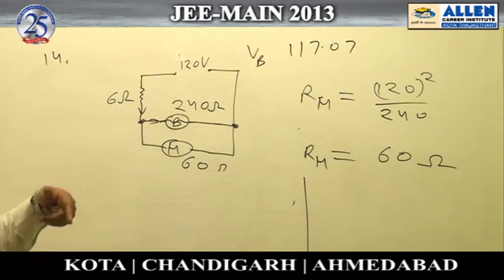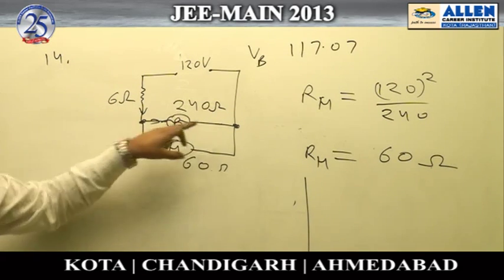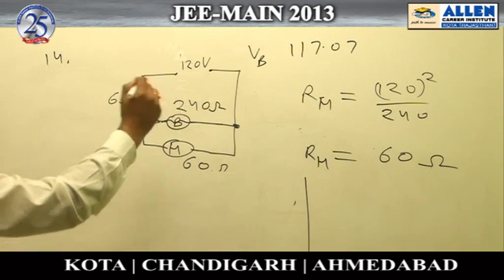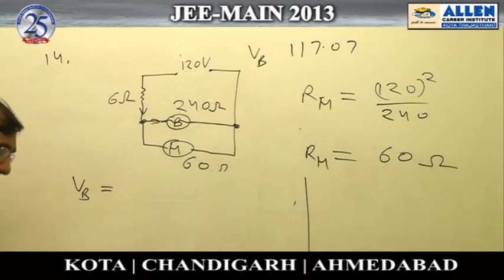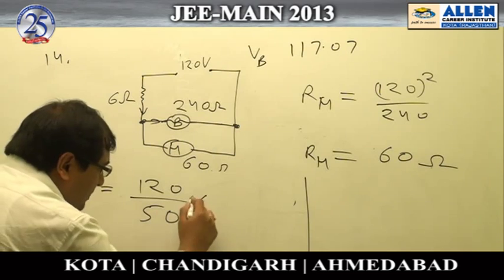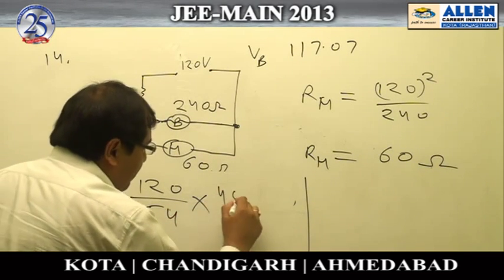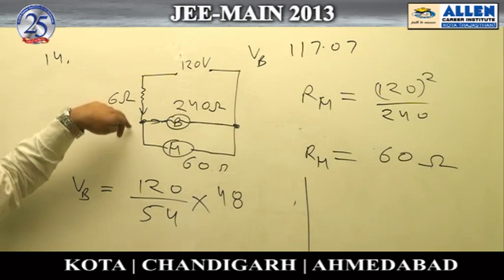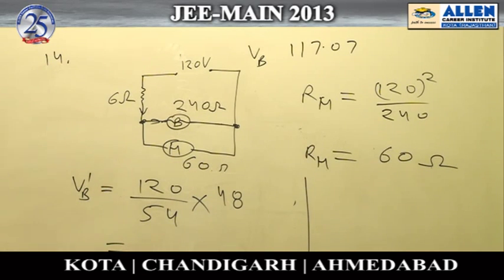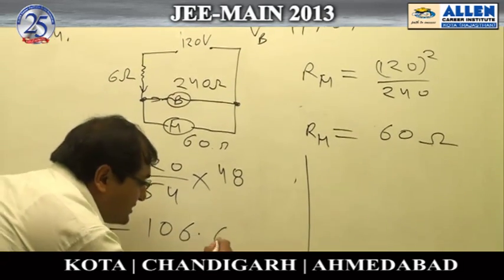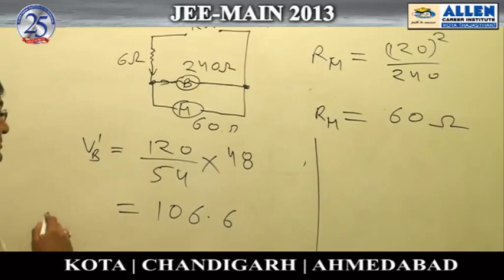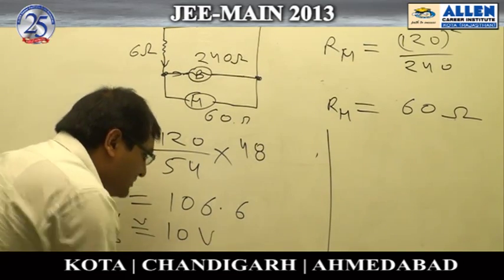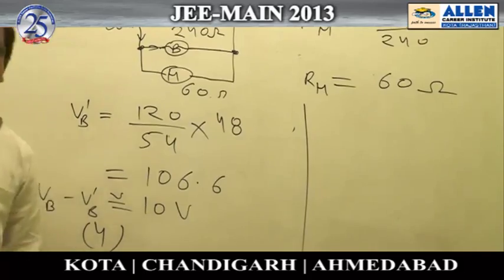To find the voltage drop across the bulb in the new circuit, the bulb and heater are in parallel and that combination is in series with the lead wire. Calculating the voltage across the parallel combination, it comes out to be 106.6 volts. The difference between the two voltage drops is approximately 10 volts, giving option number 4 as the correct answer.